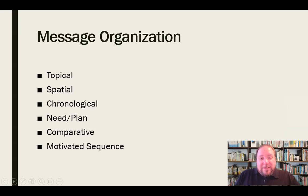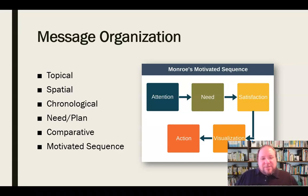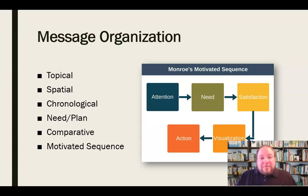Finally, there's Monroe's Motivated Sequence — sometimes called Monroe's motivated sequence — which is the psychological process of persuasion with five stages. First, we gain the attention of the audience. Then we establish a need. Next, we provide some satisfaction or plan for resolving that need. Then visualization — we help them see what the plan looks like in action. And finally, action — what they can do to spur this into motion. You see this a lot in commercials, and it was the standard of advertising for about 50 years.